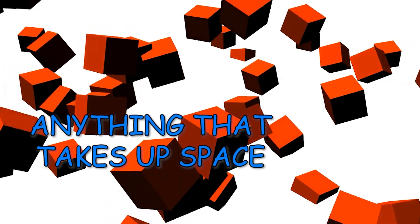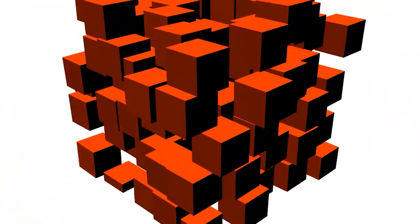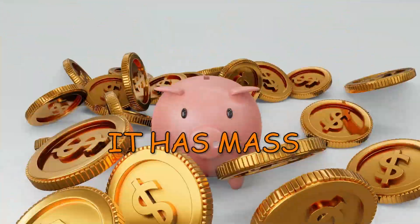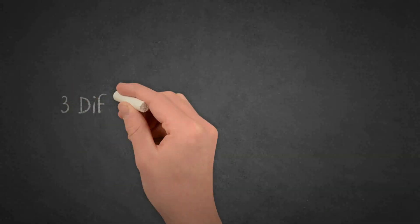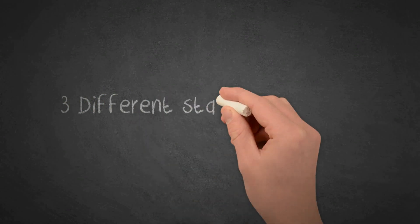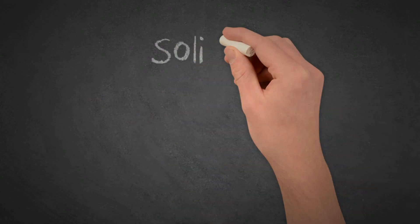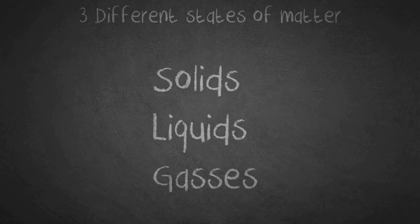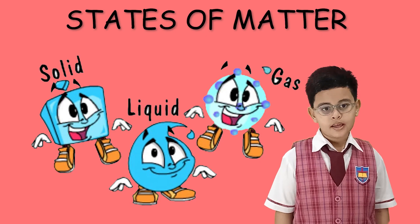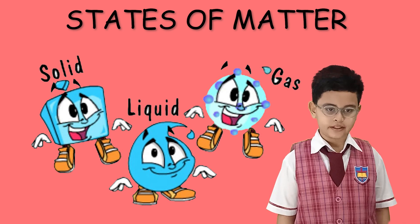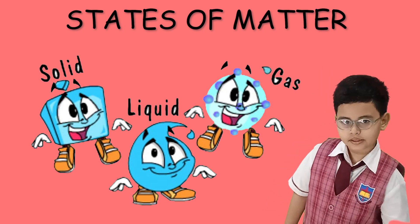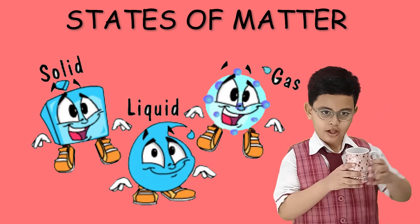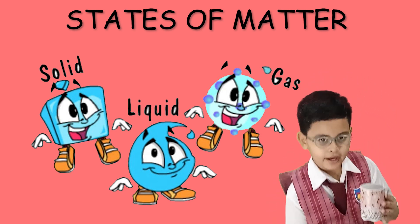Matter is anything that takes up space and it has mass. There are three different states of matter: solids, liquids, and gases. They have their own characteristics, but this time we are focusing on solid and liquid.